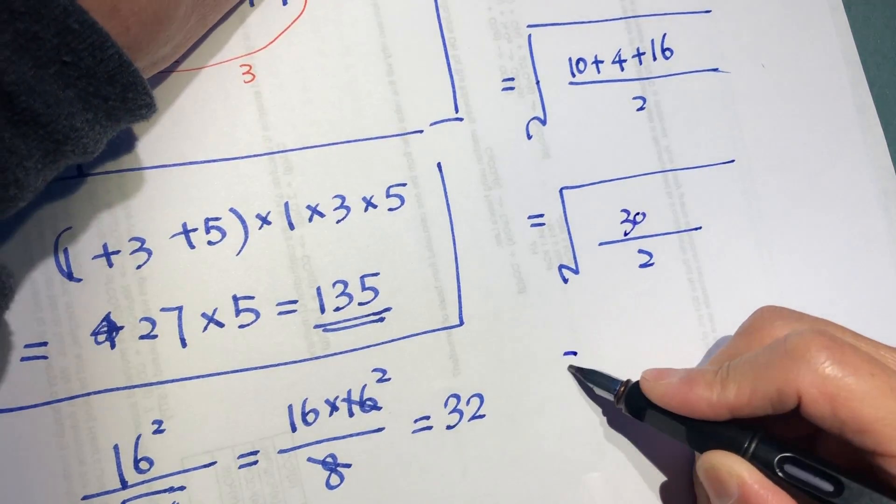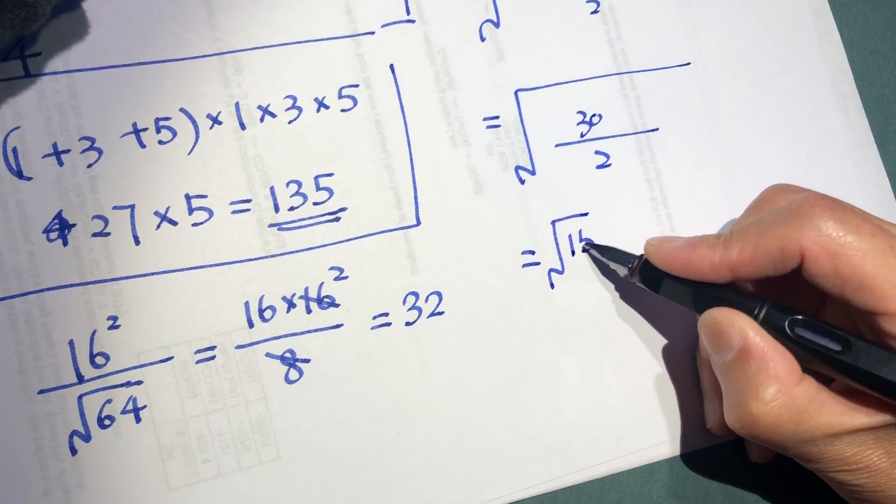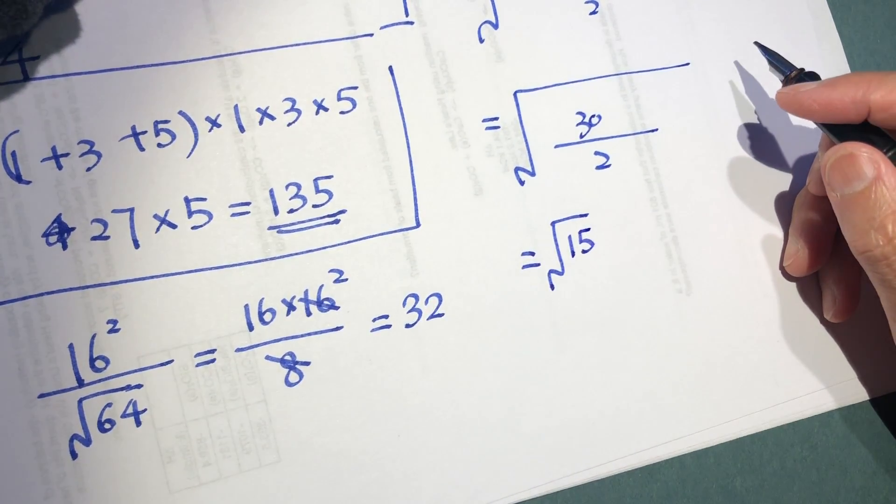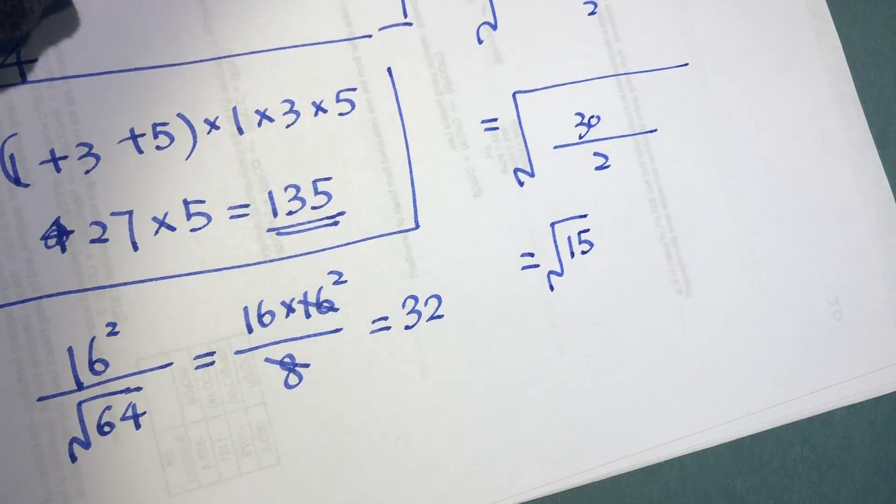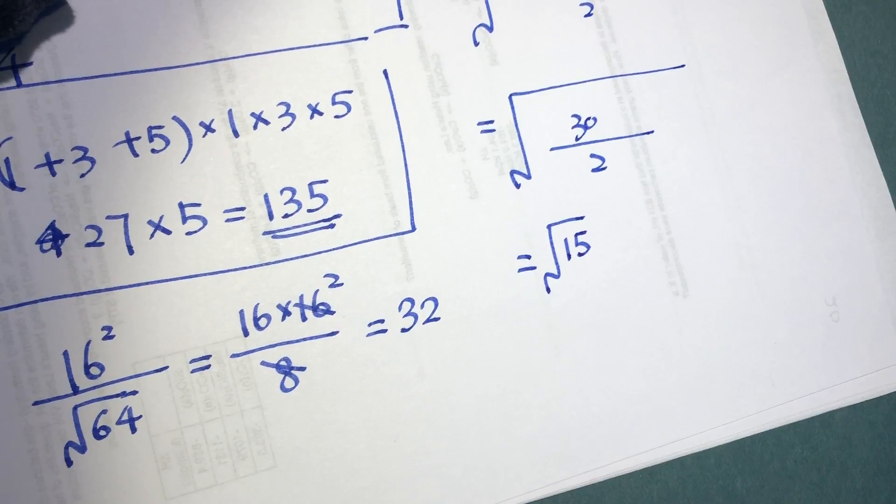So it's a square root of 15. I didn't find the fun of it. Did I do anything wrong?